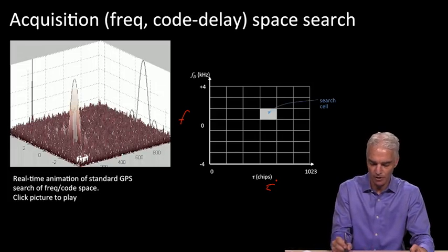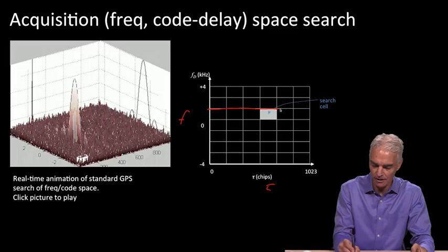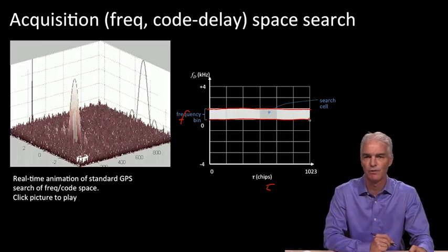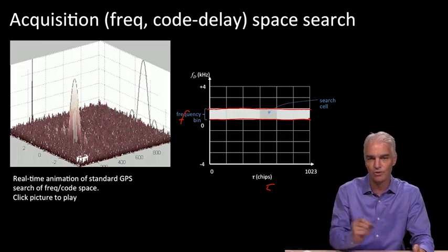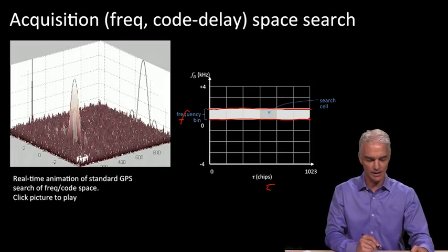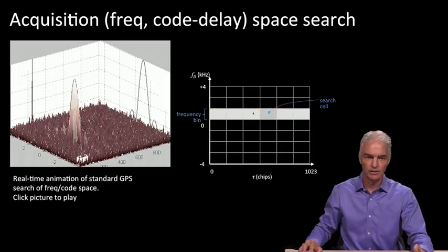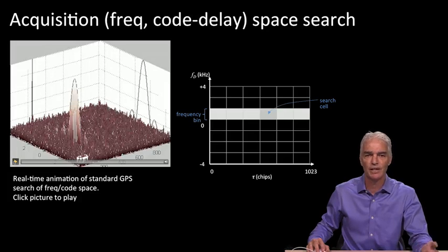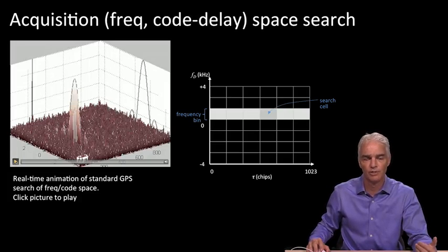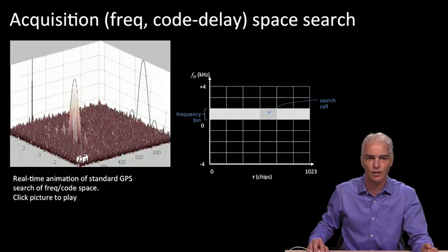A whole lot of search cells together in one particular band of frequencies is known as a frequency bin. Typically in GPS, you'd search these search cells one bin at a time. This is what it looks like when you do that — this animation is set up to run at approximately real time for a traditional GPS receiver. Modern receivers operate much faster, and we'll look into that later as the course goes on.